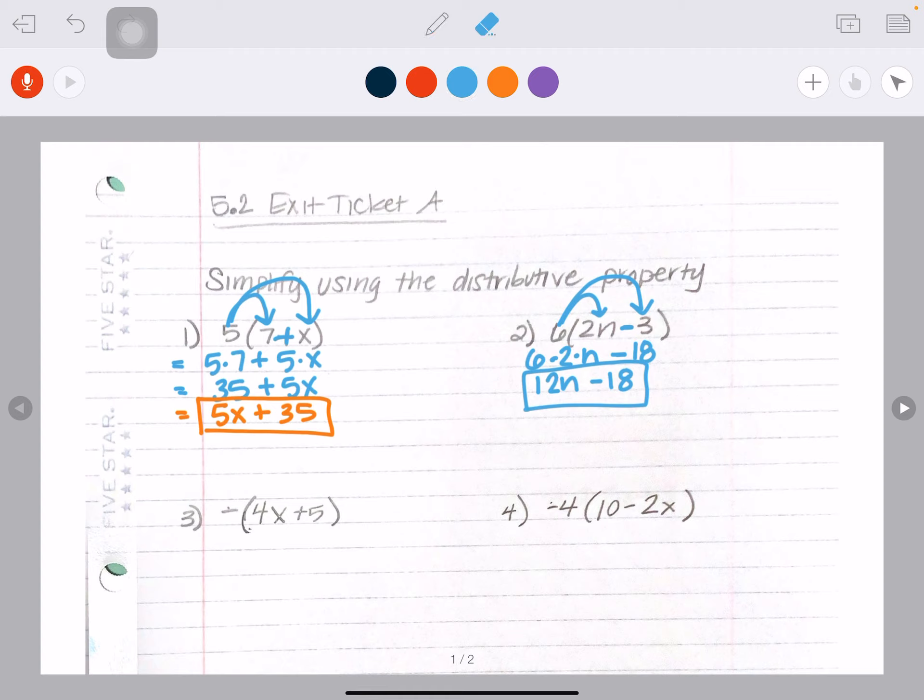But I do want to show you one other thing because those positives and negatives can be tricky. And so when I see this minus three, I think to myself, okay, well, minus three really means that I'm adding a negative three.